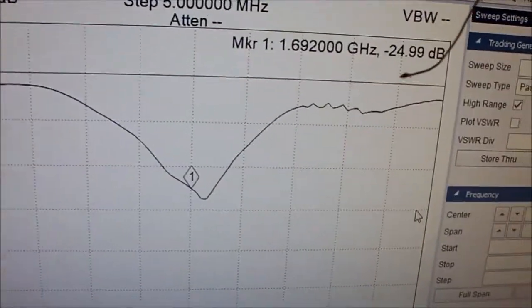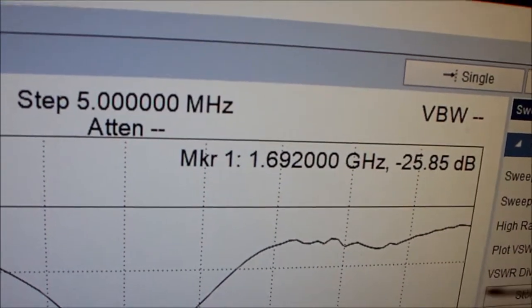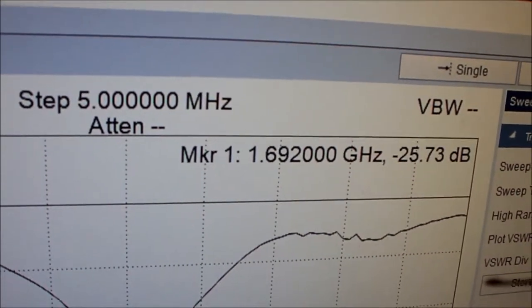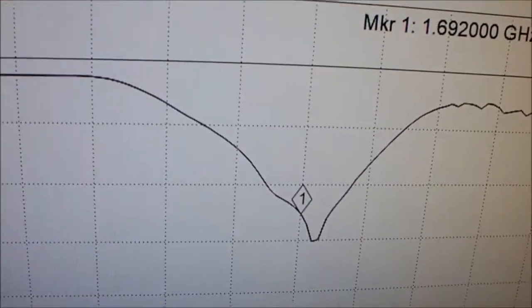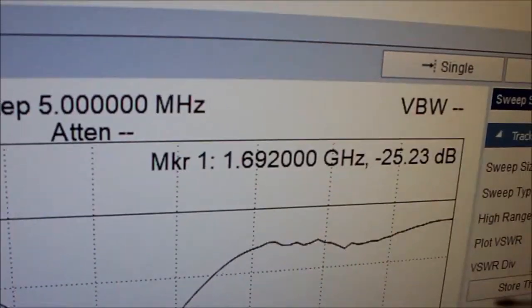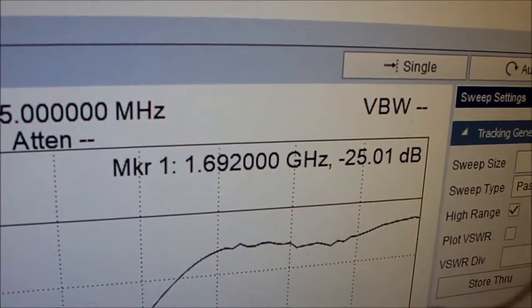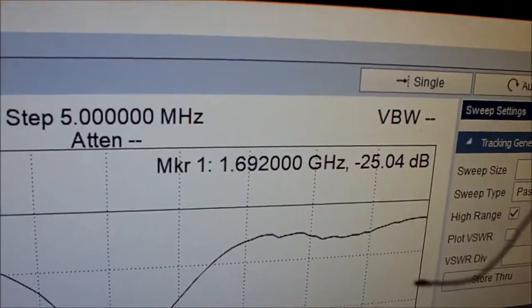We want the magic frequency of 1.692 gigahertz for the antenna and you see this dip here with the marker. Marker one is more than 20 dB down, which is the return loss.